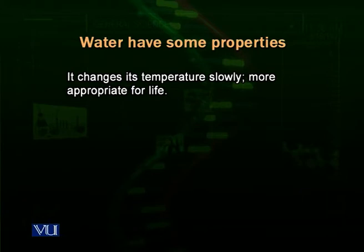Water changes its temperature slowly. Water does not change its temperature like air does quickly. This is a property which is helpful for life because sudden and quick changes in temperature are difficult for organisms to accommodate. Water is a more supportive medium for organisms, which is why lakes, oceans, and seas have a huge biodiversity.